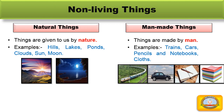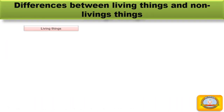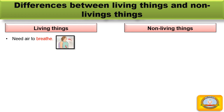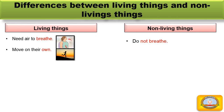Now let us look at the differences between living things and non-living things. First difference: all living things need air to breathe. Human beings and animals breathe through their nose. Fish breathe through gills. Plants also breathe. Non-living things do not breathe.